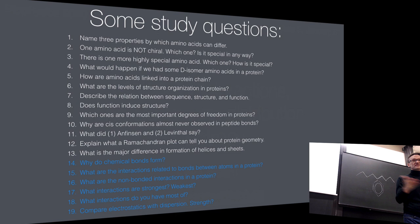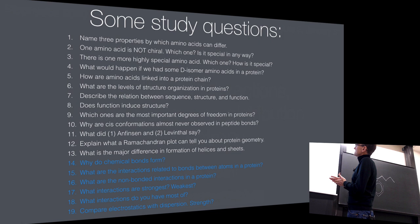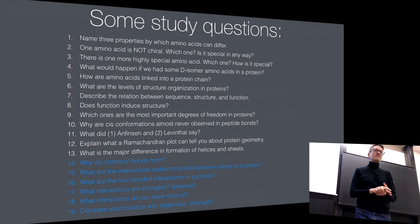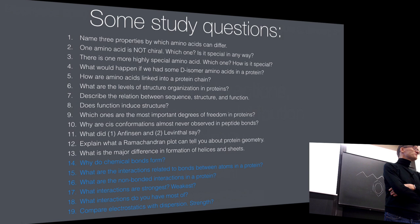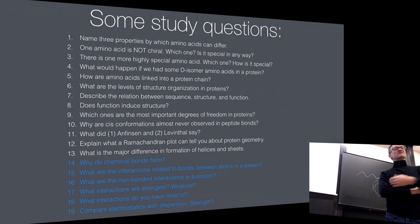Why is glycine not chiral? It doesn't have a side chain — it just has a hydrogen. There is one more highly special amino acid: proline. It has a strange ring where the side chain forms a loop that goes back and binds to the nitrogen in the same amino acid. Normally a hydrogen is bound to that nitrogen — the hydrogen that participates in hydrogen bonds in an alpha helix. So proline is problematic: it doesn't have that hydrogen and has a bulky ring, so proline simply won't fit in most alpha helices.